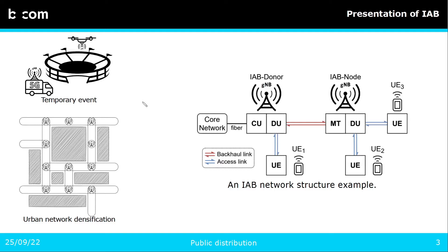One solution to reduce the cost of densification is to use a multi-hop mesh network called IAB network, which stands for Integrated Access and Backhaul. As the name implies, IAB allows the use of wireless backhaul links between gNBs, and these links can use the same frequencies as the access links for the user equipment.